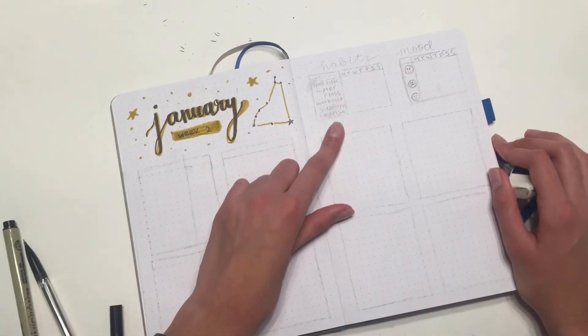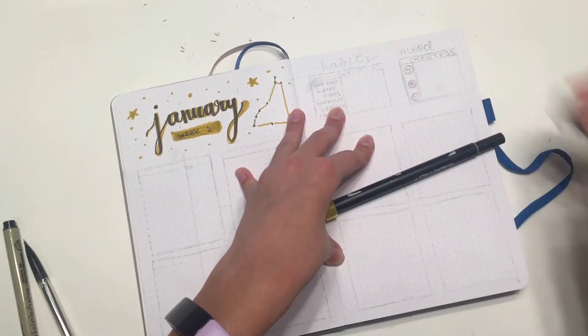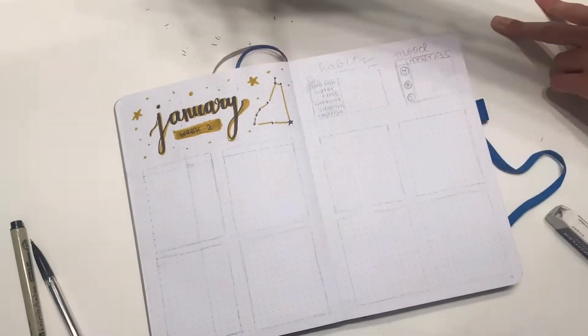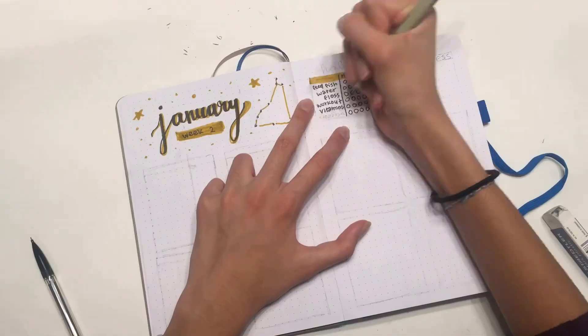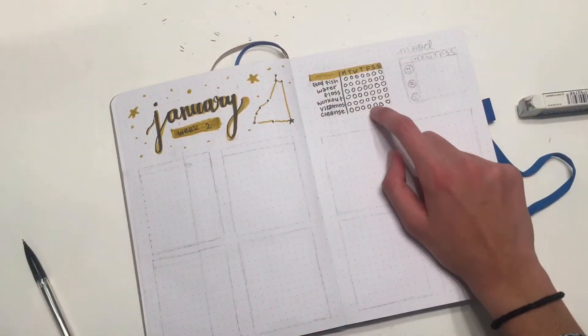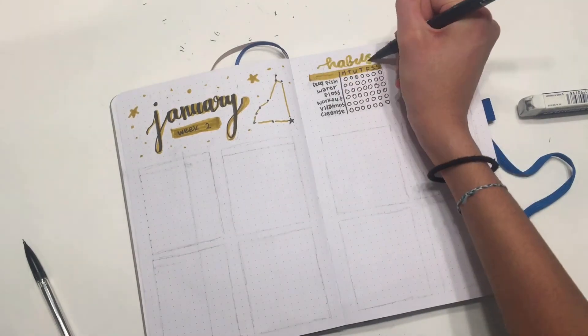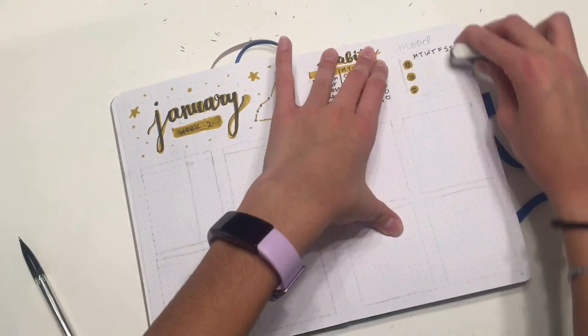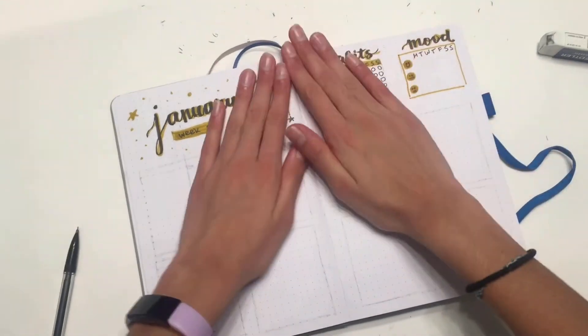Now for the trackers. I must speed this part up a bit because it's not that interesting. So let's get coloring. I did a little different this time. I put circles and then basically what I'm going to do is when I complete the habit I'm just going to color the circle in.